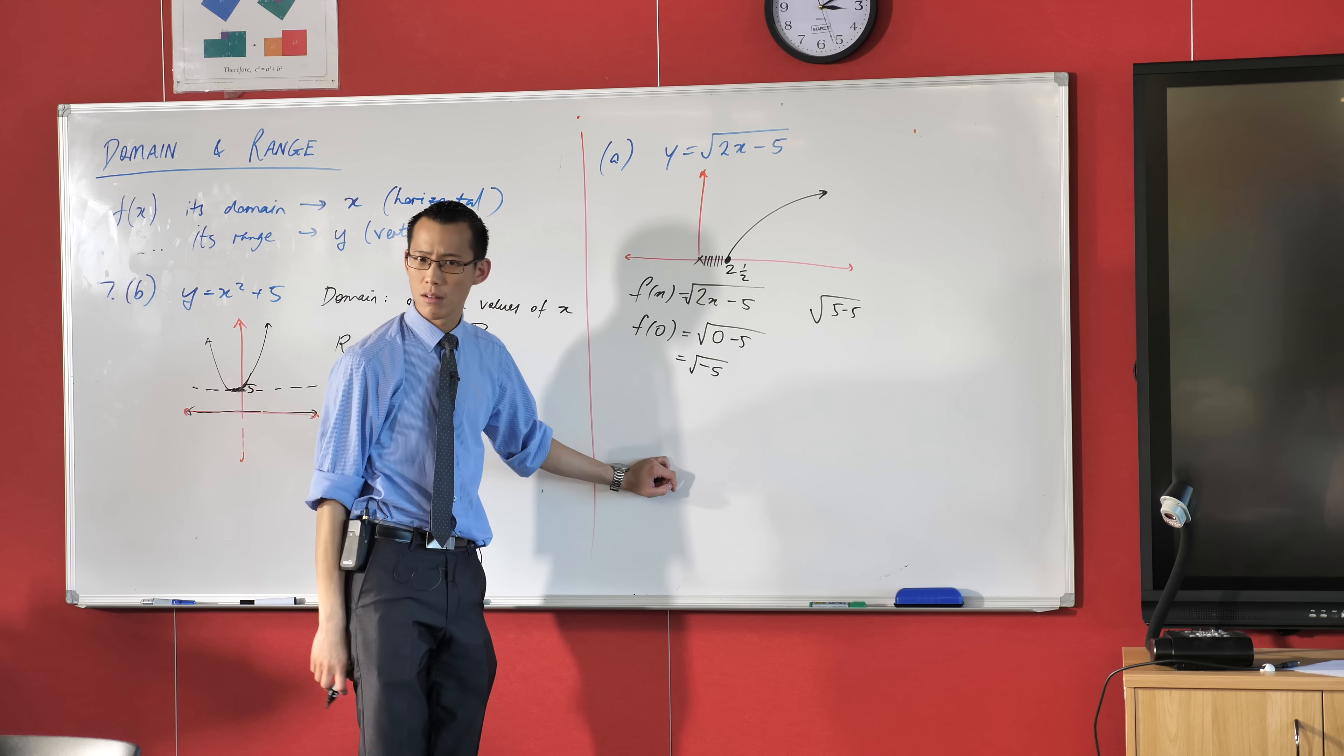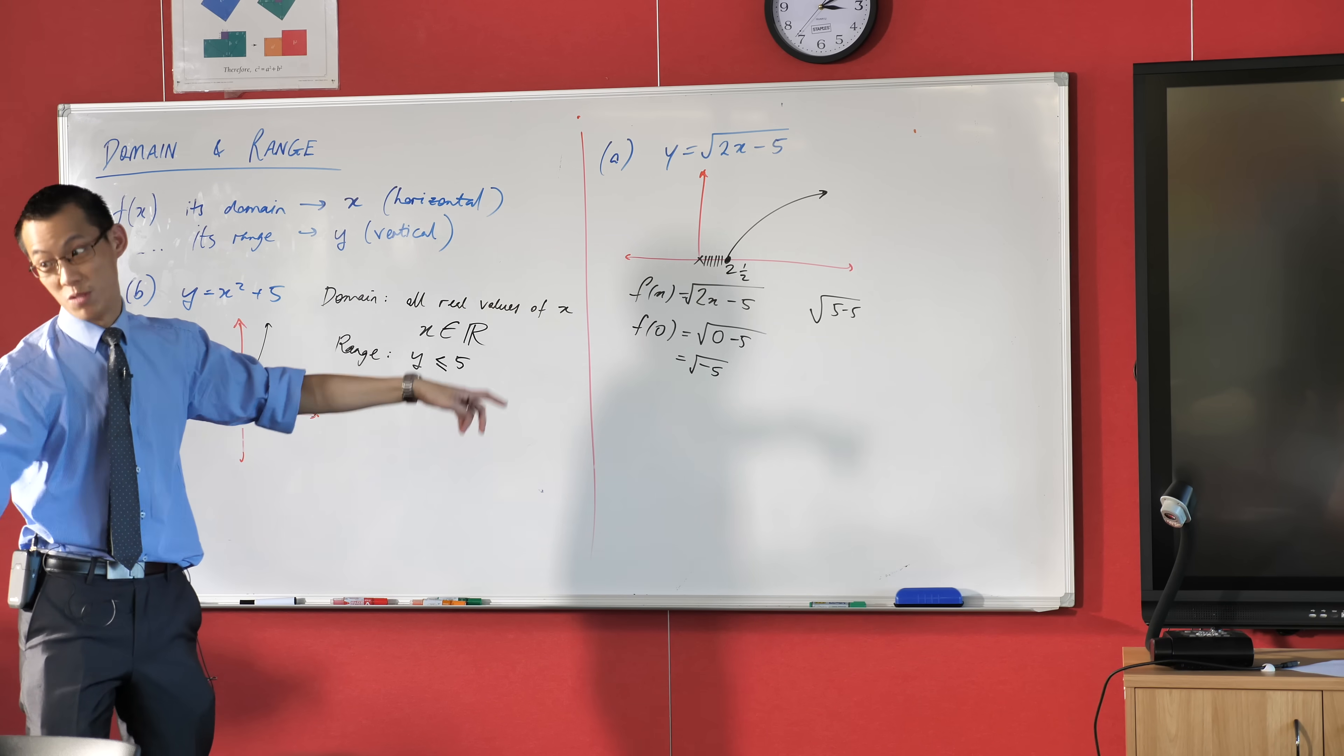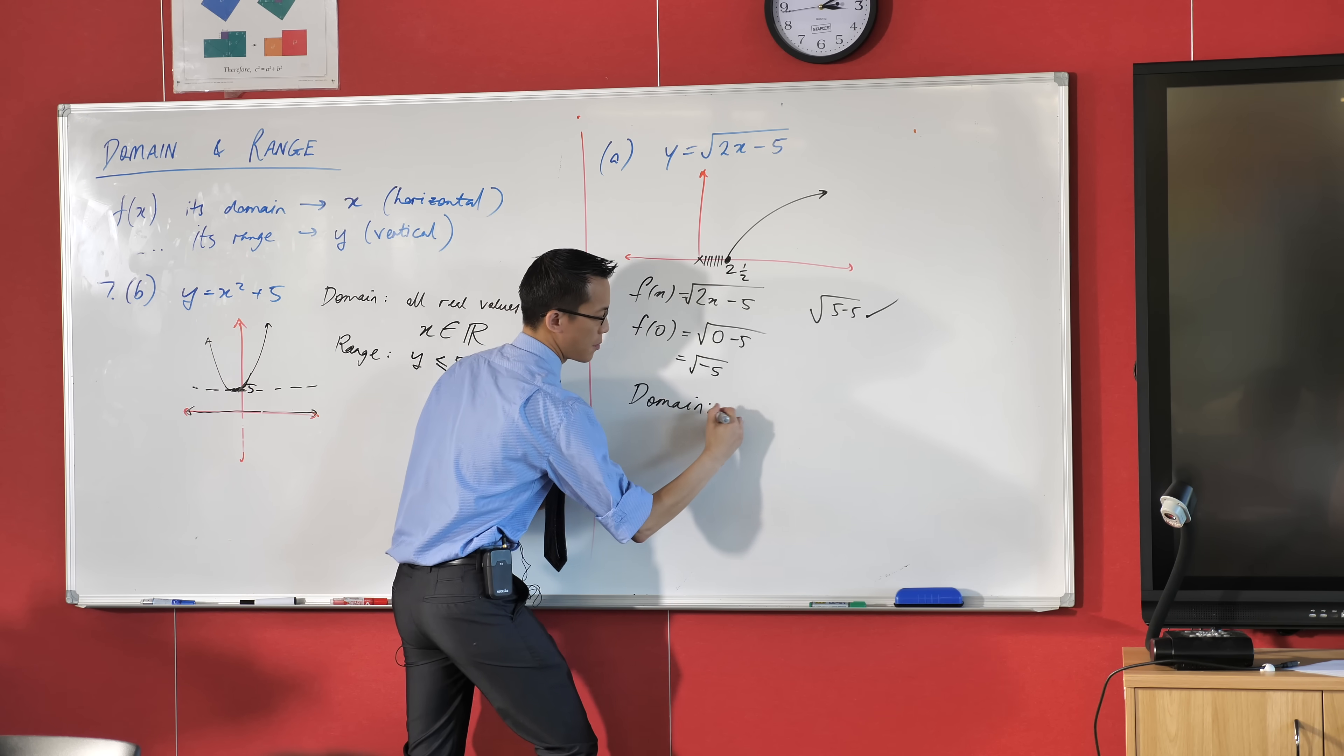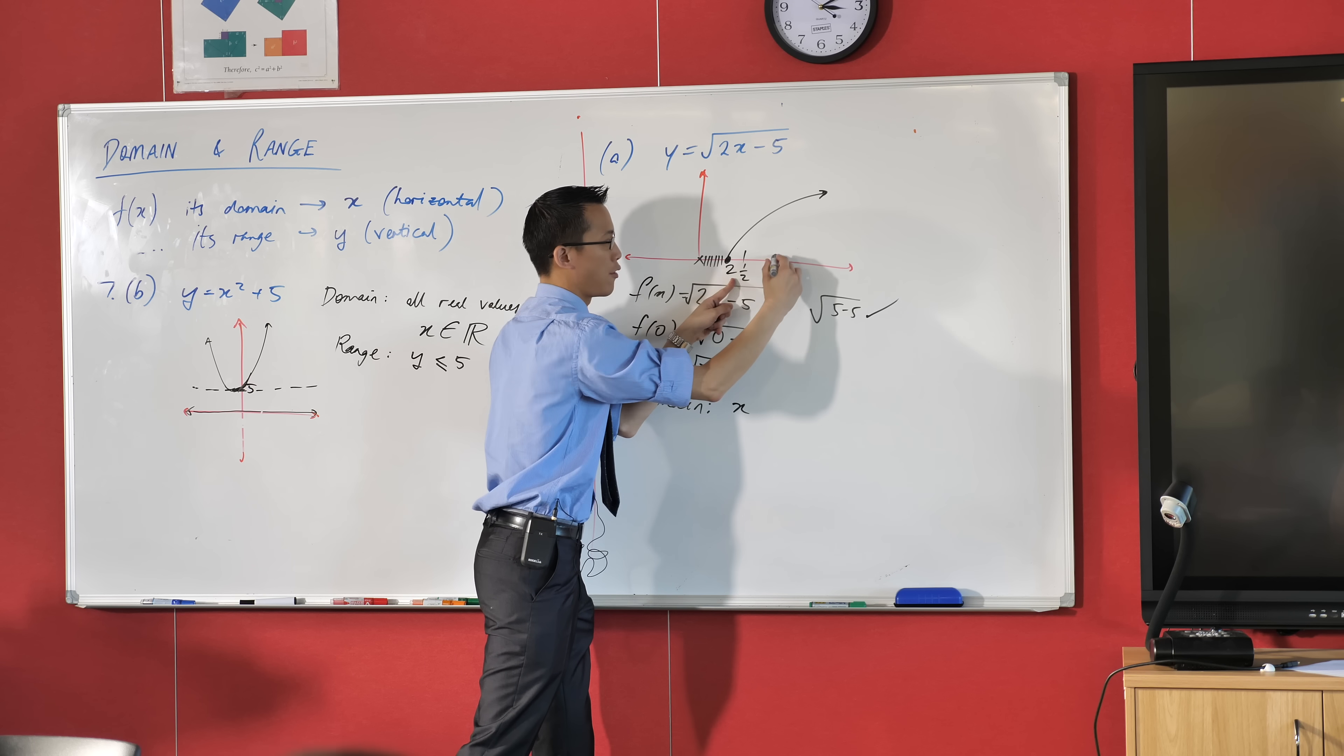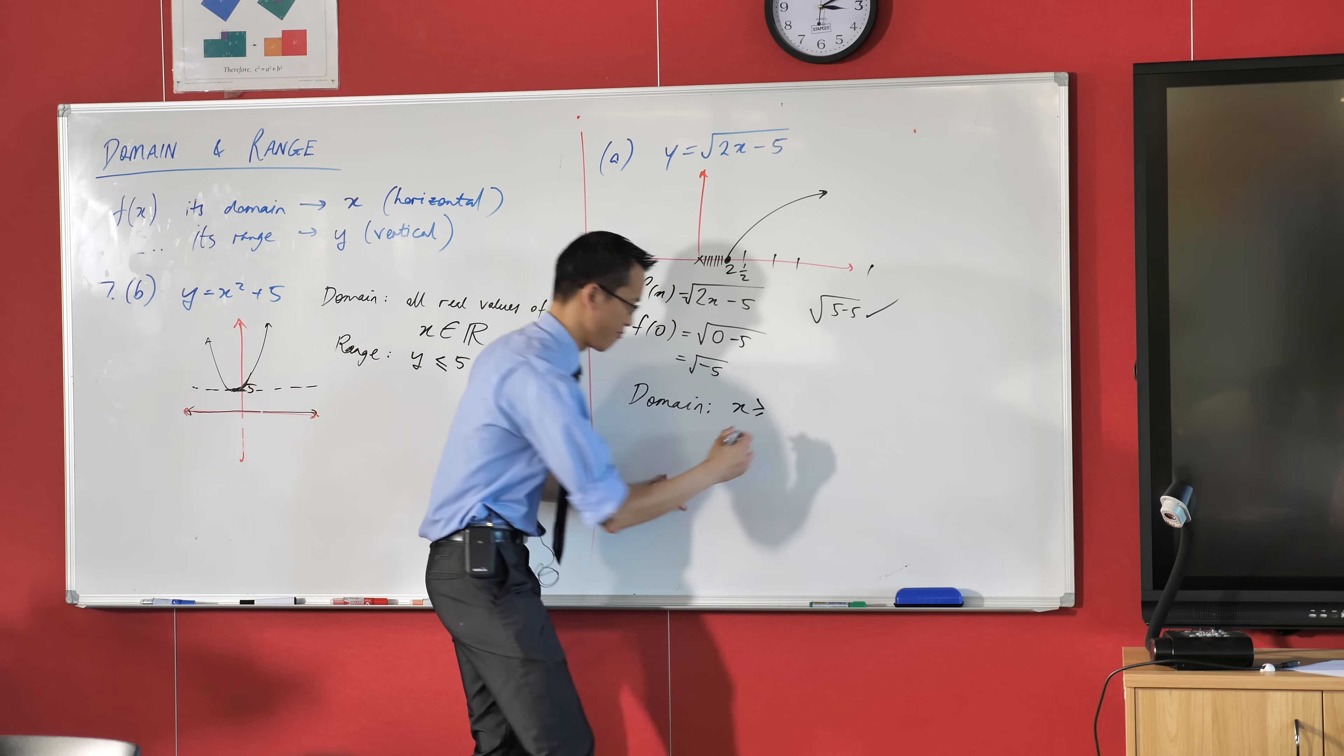A square root is the number that you multiply by itself that gives you that number. What's the number that you multiply by itself that gives you 0? 0. So that's totally fine. So here's what I'm going to say. The domain, it's going to be about the x values. I'm going to go from 2 and 1 half to the right. Anything bigger than 2 and 1 half, like 3 or 4 or 5 or 8 million. Not to scale. Anything to that direction is fine. So I'm going to say greater than or equal to 2 and 1 half.